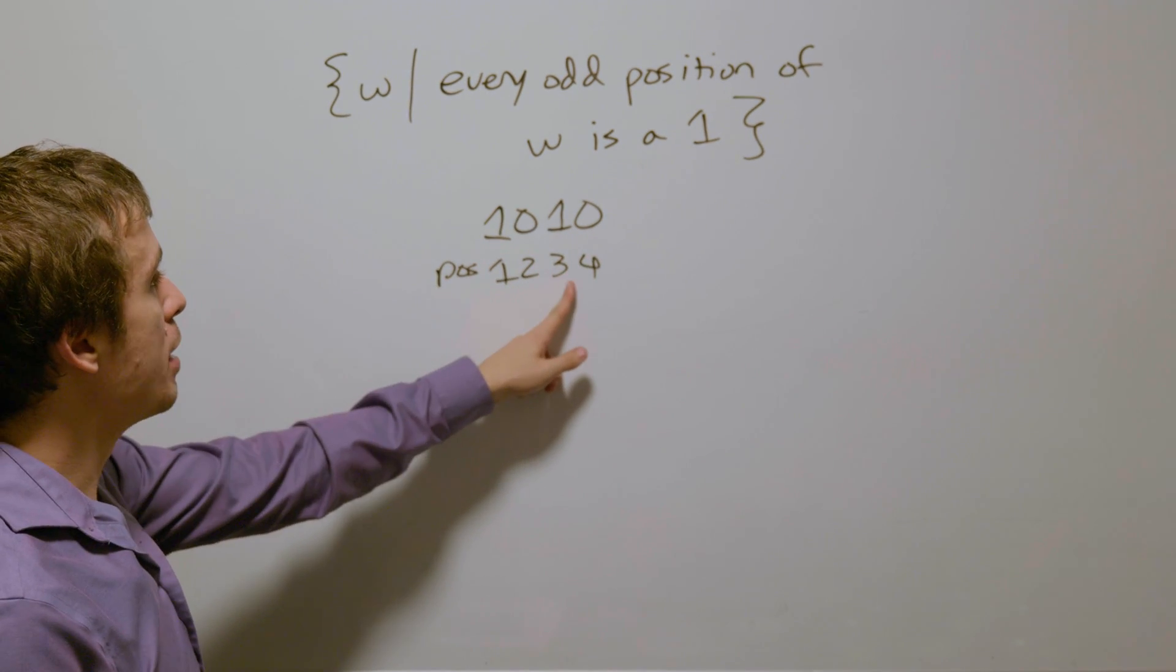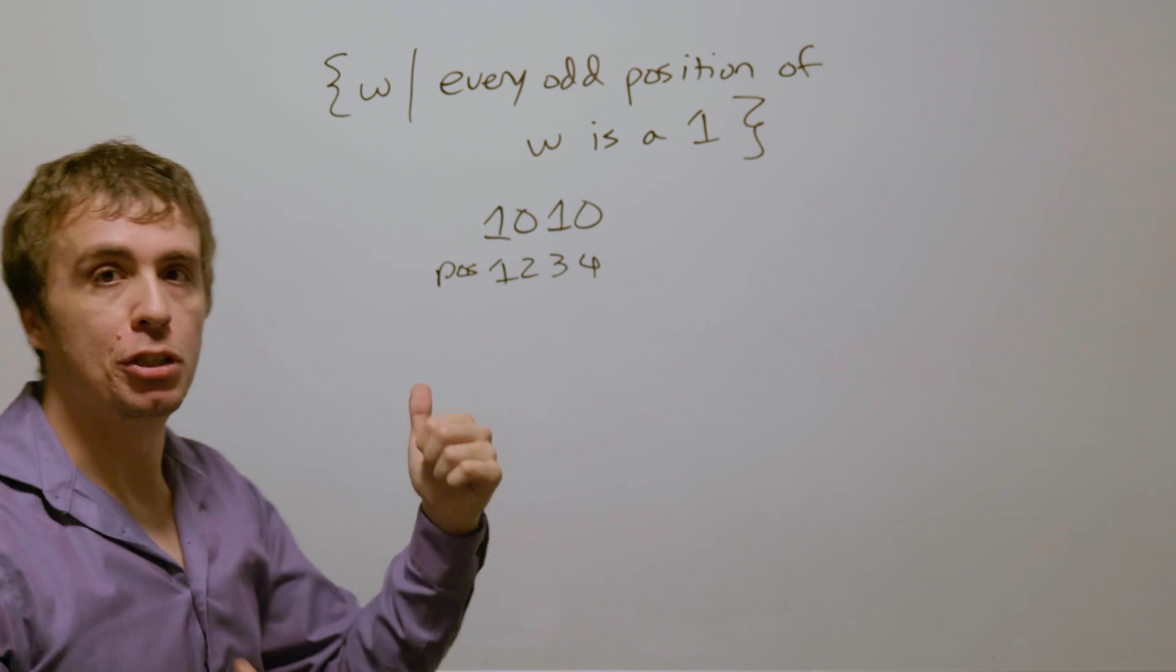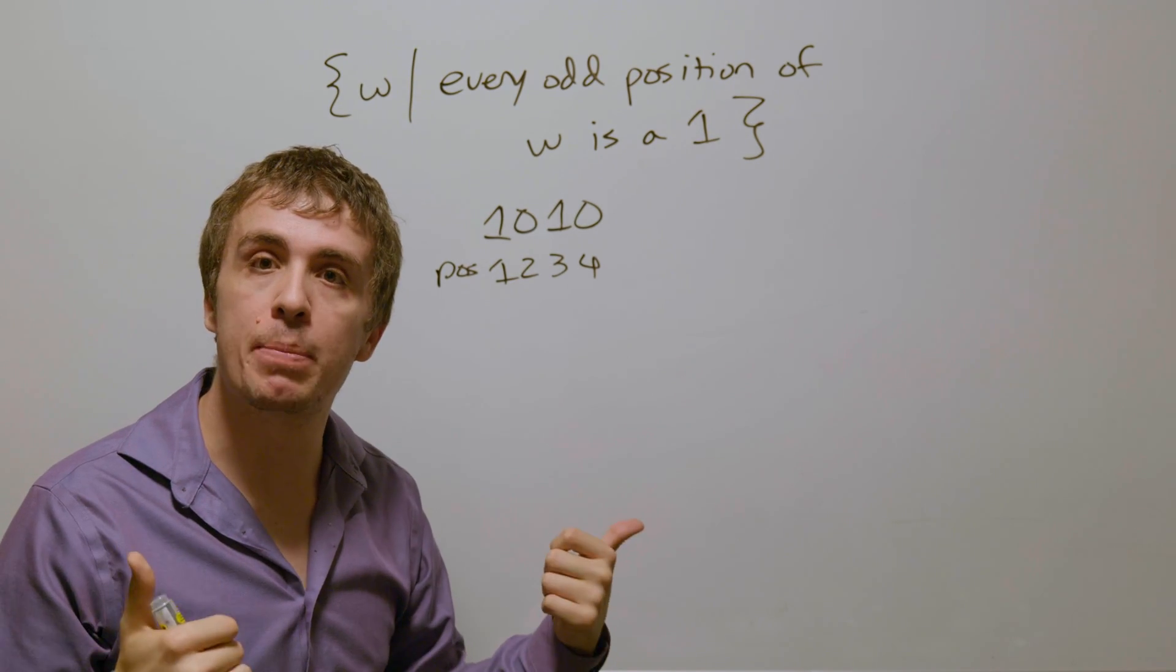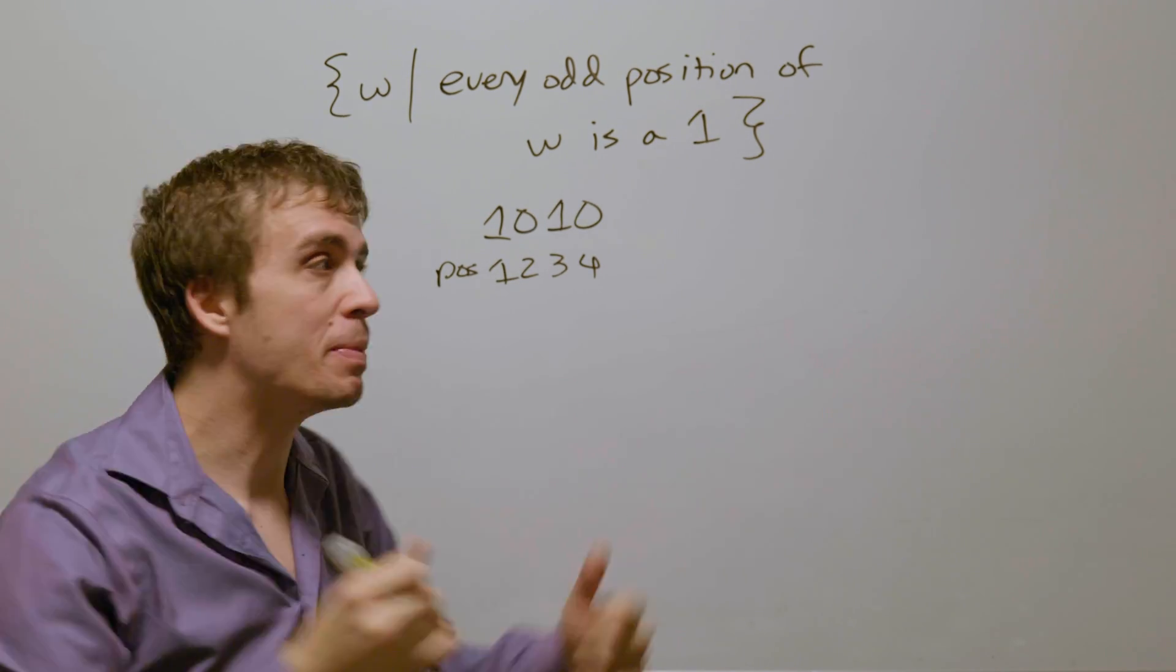So in positions one and three, we have a one. And so therefore, since every odd position of w is a one, that string should be accepted.